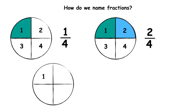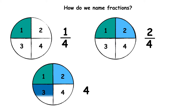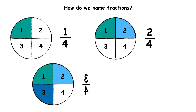This circle has also been cut into four equal pieces. There are four pieces in total. I am going to colour in three of the four equal pieces. I have coloured in three pieces out of four. When we have three pieces out of a possible four, we have three quarters.